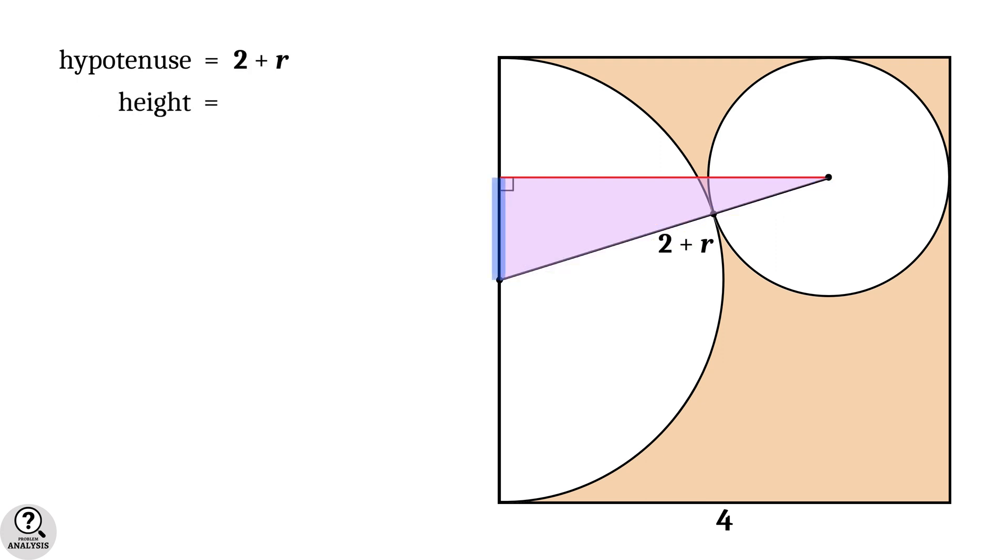Its height is equal to radius of the semicircle, that is two, minus this side, which is again equal to the radius of the circle r.